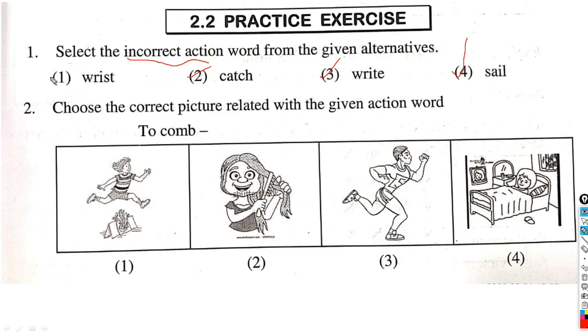But wrist - what do you mean by wrist? Wrist means kalai. So the wrong answer is option number 1. Question number 2: Choose the correct picture related with the given action word. You have to choose the correct picture related to the action 'to comb.' There are four pictures. First one is jumping, second one is combing, so second one is the correct one for this question.